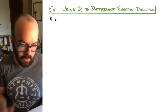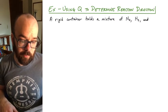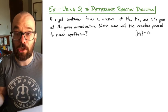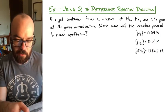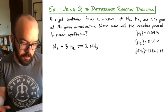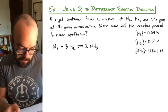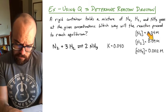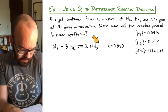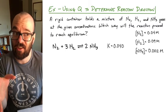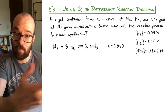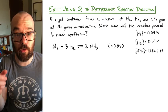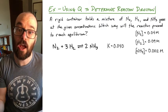Here's an example: a rigid container holds a mixture of nitrogen, hydrogen, and ammonia gas at given concentrations. Which way will the reaction proceed to reach equilibrium? The reaction is N₂ + 3H₂ → 2NH₃ (all gases), and the K value is 0.040. Looking at the given concentrations — all decimals, none are zero — and the coefficients of 1, 3, and 2, I can't just tell which way it will go. So we calculate Q.